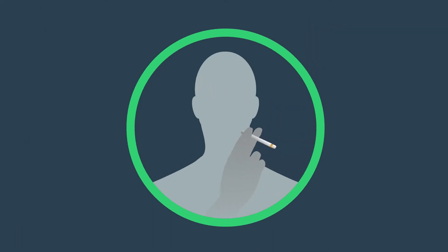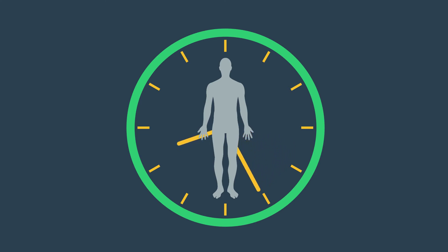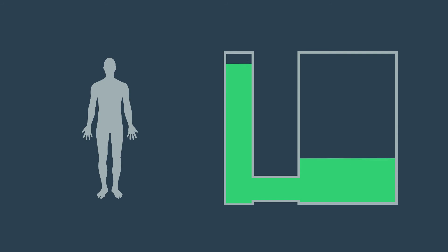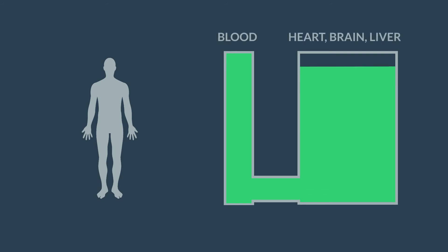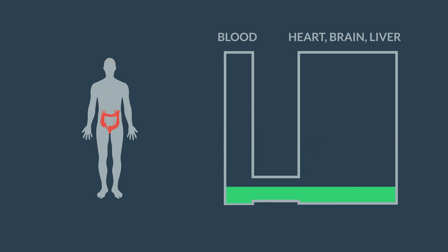The time frame of detection for cannabis depends primarily on the amount consumed and the duration of use. Following a single exposure, cannabis is rapidly eliminated from the body. First, it is distributed to highly vascularized organs such as the brain, heart, and liver, and then it is excreted in urine and feces.